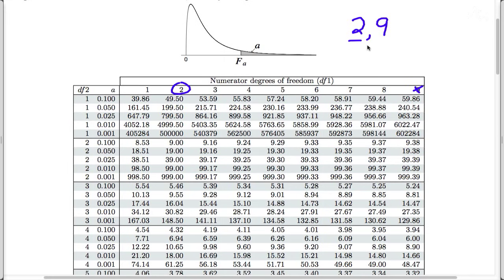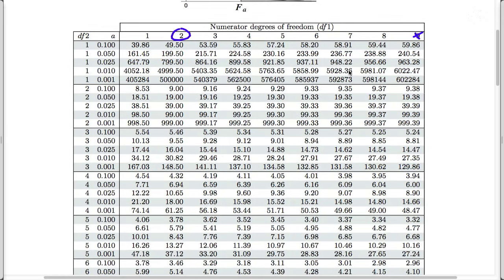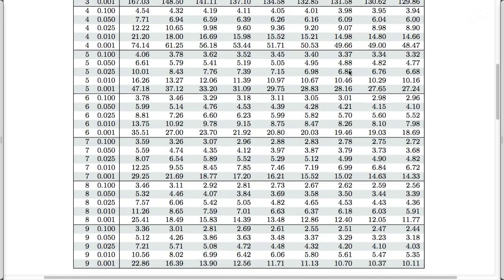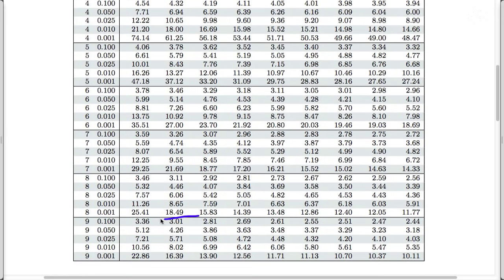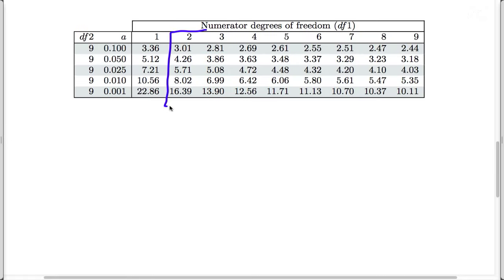which is here, and then we need to find 9 in the denominator. So we'd have to scroll down until we found this section. Now I'm going to blow that up a bit so it's easier to work with. Here we have 2 degrees of freedom in the numerator and 9 in the denominator.